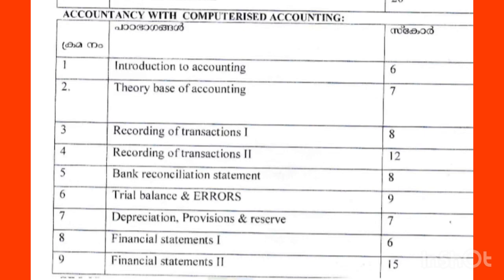Then, trial balance and errors — we will predict that in a year's mark. That includes error of commission, error of principle, and compensating errors. Then, depreciation, provisions and reserves — we will predict that in a year's mark.